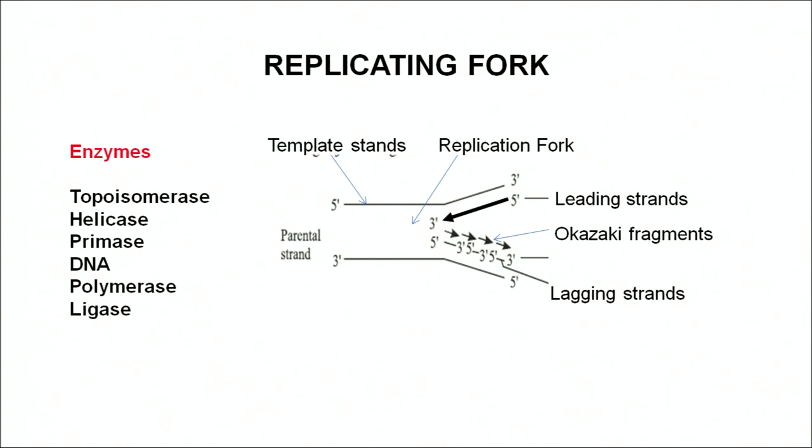DNA cannot be replicated from any place. It can be replicated only at special origin of replication fork places. At the replication fork, topoisomerase and helicase bind to DNA, open it up, and make a fork so that synthesis of new strands can take place. The DNA polymerase enzyme cannot start replication on its own. It needs a primer — 5 to 10 base pairs of RNA — which is synthesized by the enzyme primase. The primase synthesizes the RNA and DNA polymerase keeps on adding nucleosides present in the cell to that chain, ultimately synthesizing the new strand of DNA.